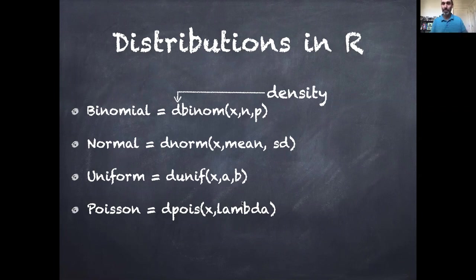Lambda is the rate at which something can occur in space or time. Then x would be an integer representing how many times you actually counted that event given some rate lambda.